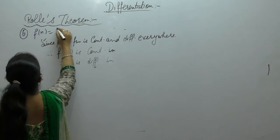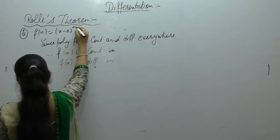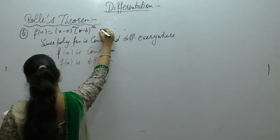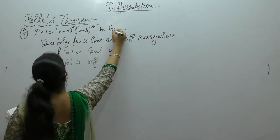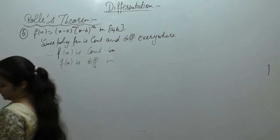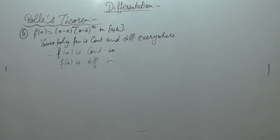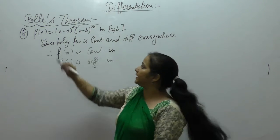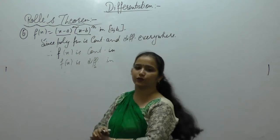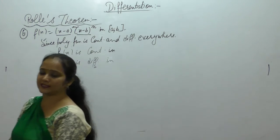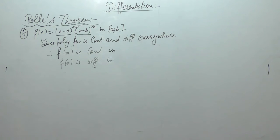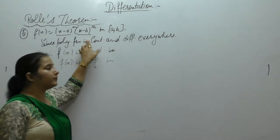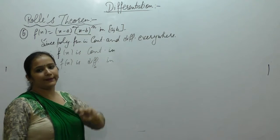Consider f(x) = (x-a)^m · (x-b)^n on the interval [a,b], where m and n are positive integers. If we expand these using the binomial theorem and take the product, we get a polynomial of degree m plus n.